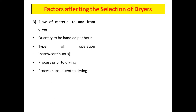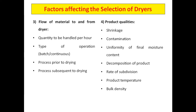Process subsequent to drying also matters. Regarding product qualities: shrinkage — you need to check whether your product is going to shrink; contamination — very cautious steps must be taken; uniformity of final moisture content should be ensured; decomposition of the product is important because it can lead to a useless pharmaceutical material. Also, rate of subdivision, product temperature, and bulk density all need to be determined before selecting a dryer.